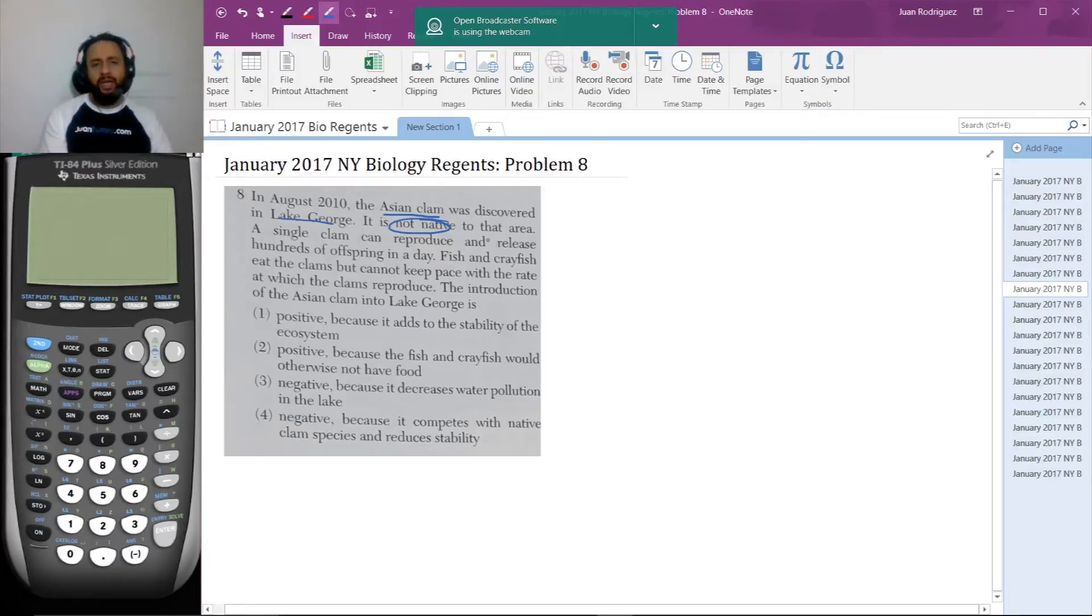And in fact, that's actually what it says here. It reproduces and produces hundreds of offspring in a day. And then if fish and crayfish eat the clams, so nice positive result food, but cannot keep pace with the rate at which clams reproduce. That sounds like a negative end result.